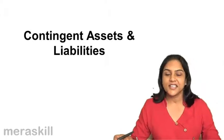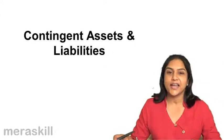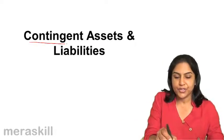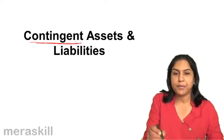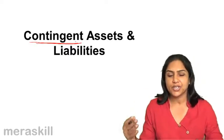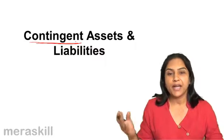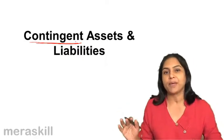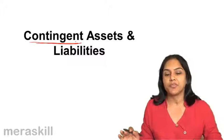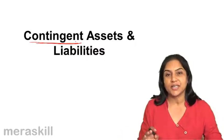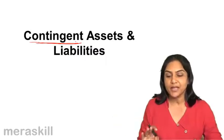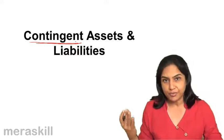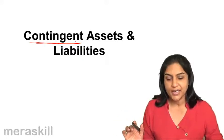Contingent assets and liabilities. What is contingent? It is dependent on the happening of some future event, or on the non-happening of some future event. A contingent asset is an asset which may arise. A contingent liability is a liability which may or may not arise.